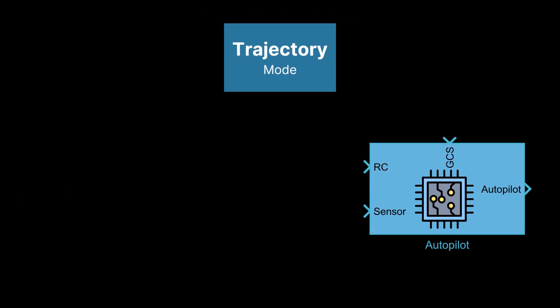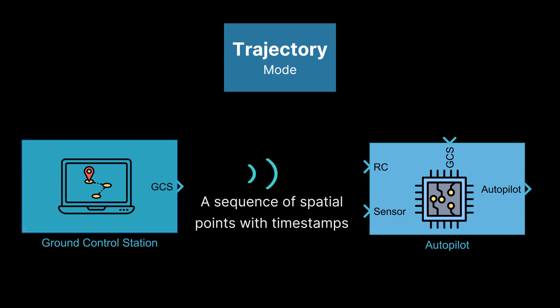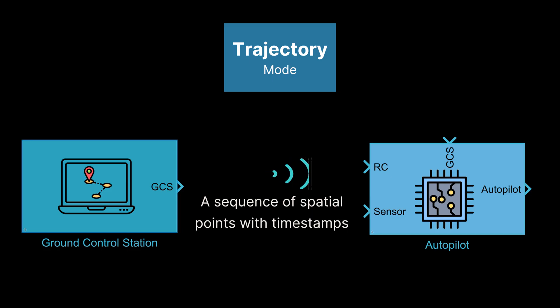In trajectory mode, the ground control station (GCS) sends reference trajectory commands to the drone's autopilot, guiding its movement along a predefined path. The trajectory consists of a sequence of spatial points with corresponding timestamps, ensuring precise position and timing control during flight.